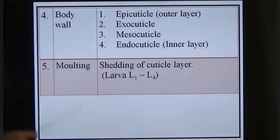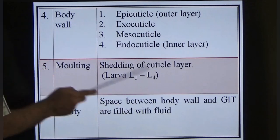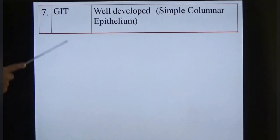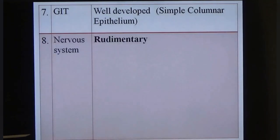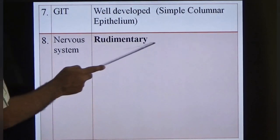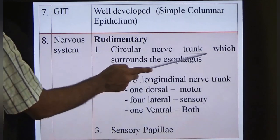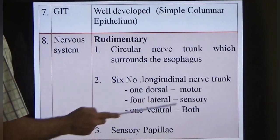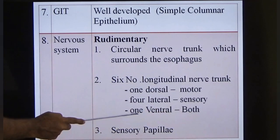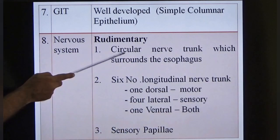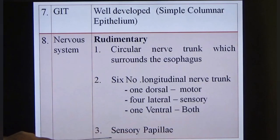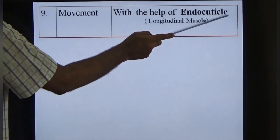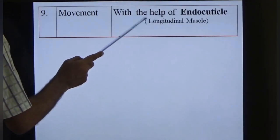The body cavity is the space between the body wall and the gut, filled with fluid responsible for many clinical features. The gut is well developed, made of simple columnar epithelium. The nervous system is rudimentary — there is one circular nerve trunk surrounding the esophagus and six longitudinal nerve trunks: one dorsal (motor), four lateral (sensory), and one ventral (both motor and sensory). Sensory papillae are present mainly in the male parasite. Movement is achieved via the endocuticle's longitudinal muscle fibers.